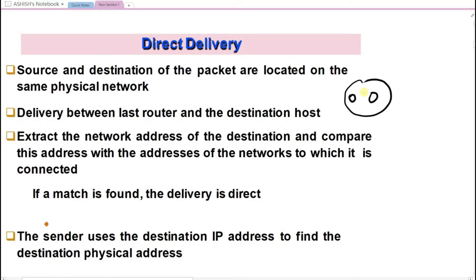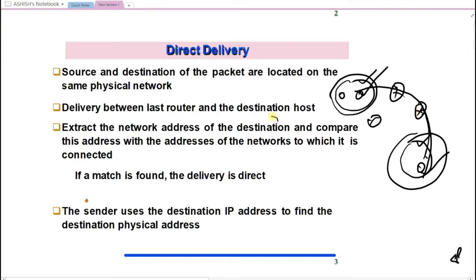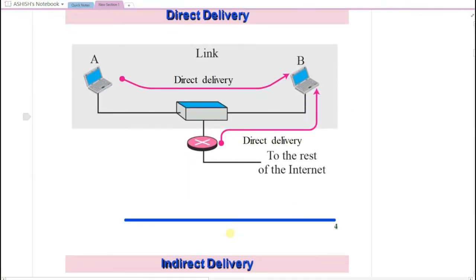Even if there are two networks and a machine wants to send something to another machine through some routers, the last router which is connected to the destination network is also considered a direct delivery. So direct delivery has two conditions: either the source and destination are in the same network, or it is the last router delivering to the destination using the destination address.